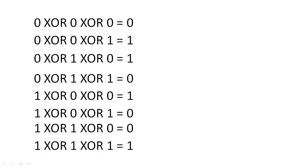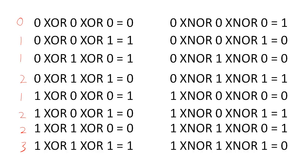Parity bits can be quickly and easily implemented by using the XOR operation. The XOR operation can be thought of as an odd-even detection operation. If we XOR all input variables together, the XOR will output a 1 if there was an odd number of 1s, and it would output a 0 if there was an even number of 1s. This output would signal whether an error occurred. Alternatively, we could use the complement of the XOR operation, the XNOR operation, to flag errors. The XNOR operation would output a 0 if there was an odd number of 1s, and it would output a 1 if there was an even number of 1s.